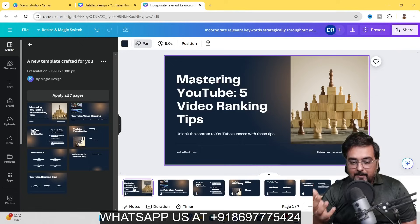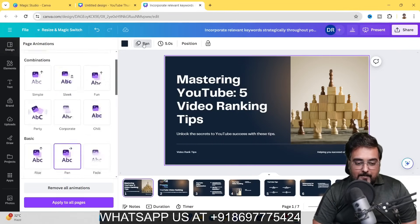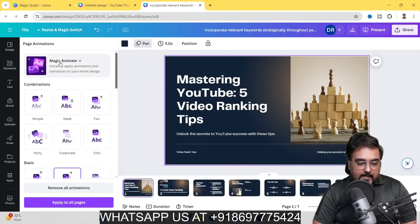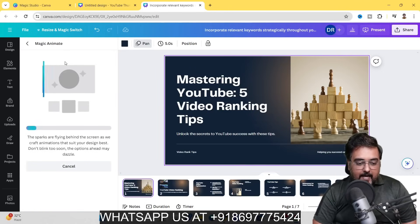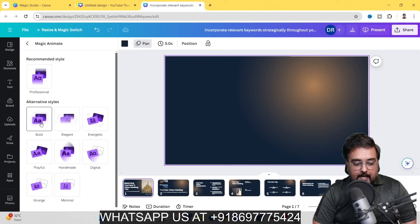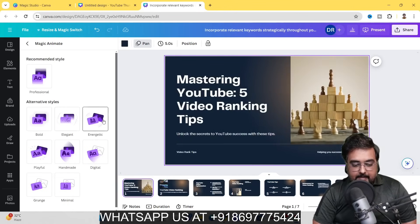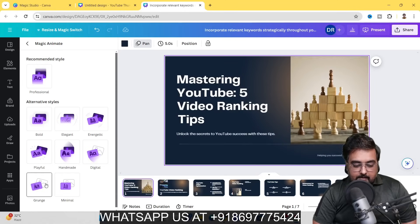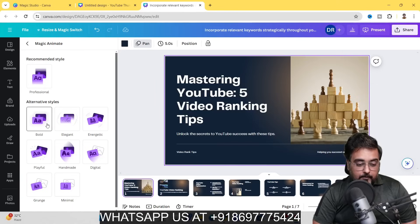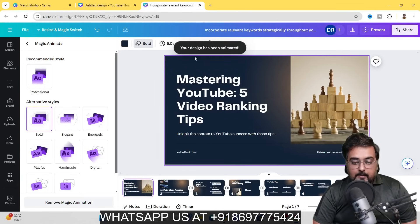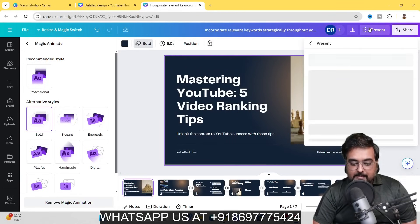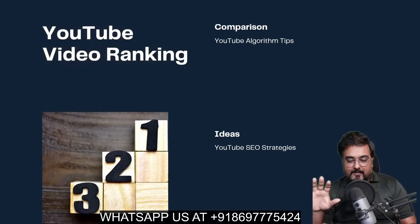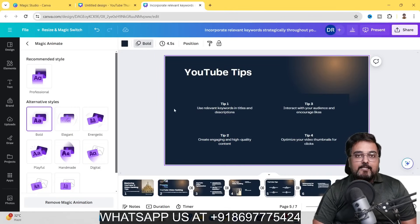Once the presentation is done, you might want to add animation. Go to 'Animate' and you'll find Magic Animate. Click on that and you'll see different styles: bold, elegant, energetic, digital, handmade, playful, grunge, and minimal. If you want bold, just click on bold and the design gets animated. Now if we present this, you can see it comes up quite amazingly and looks quite professional.